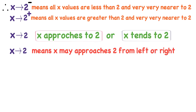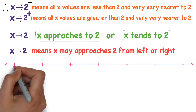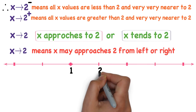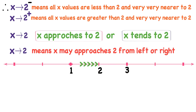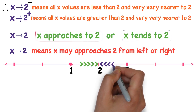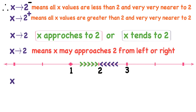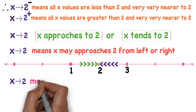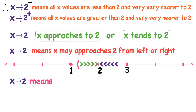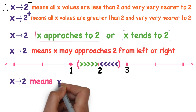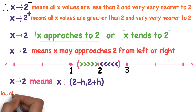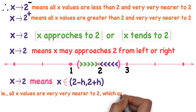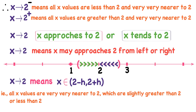On the number line, x approaches to 2 means it may approach from left or from right — from any side. In other words, all x values are in the neighborhood of 2, meaning all x values are very very nearer to 2, which are slightly greater than 2 or slightly less than 2.